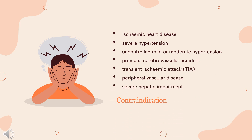Contraindications. As with other triptans, Narotriptin should not be used in patients with a history, symptoms, or signs of ischemic heart disease, myocardial infarction, angina pectoris, documented silent ischemia, Prinzmetal's angina, or severe hypertension and uncontrolled mild or moderate hypertension. Other contraindications are previous cerebrovascular accident (CVA), or transient ischemic attack (TIA), peripheral vascular disease, severe hepatic impairment, concomitant administration of ergotamine, ergotamine derivatives including methysergide, and other 5-HT1B/1D agonists.